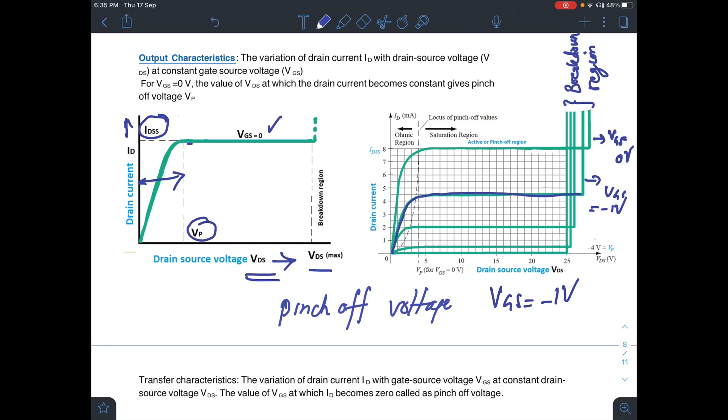Again, you can see after a pinch-off voltage. Here, the pinch-off voltage for VGS equal to 0 is 4V. But when VGS is minus 1V, your pinch-off voltage is somewhere less than 4V.